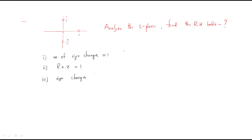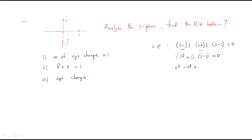We write the characteristic equation from the poles: (s − j)(s + j)(s − 1) = 0. The product (s + j)(s − j) gives s² + 1, and multiplying by (s − 1) gives s³ − s² + s − 1 = 0.